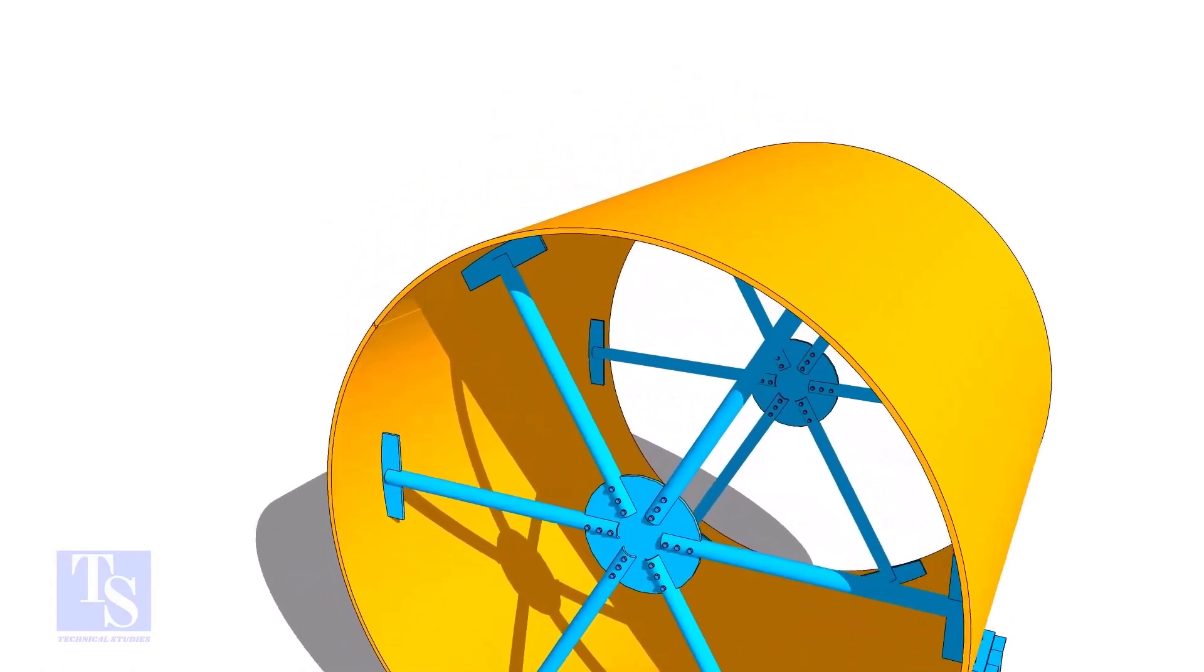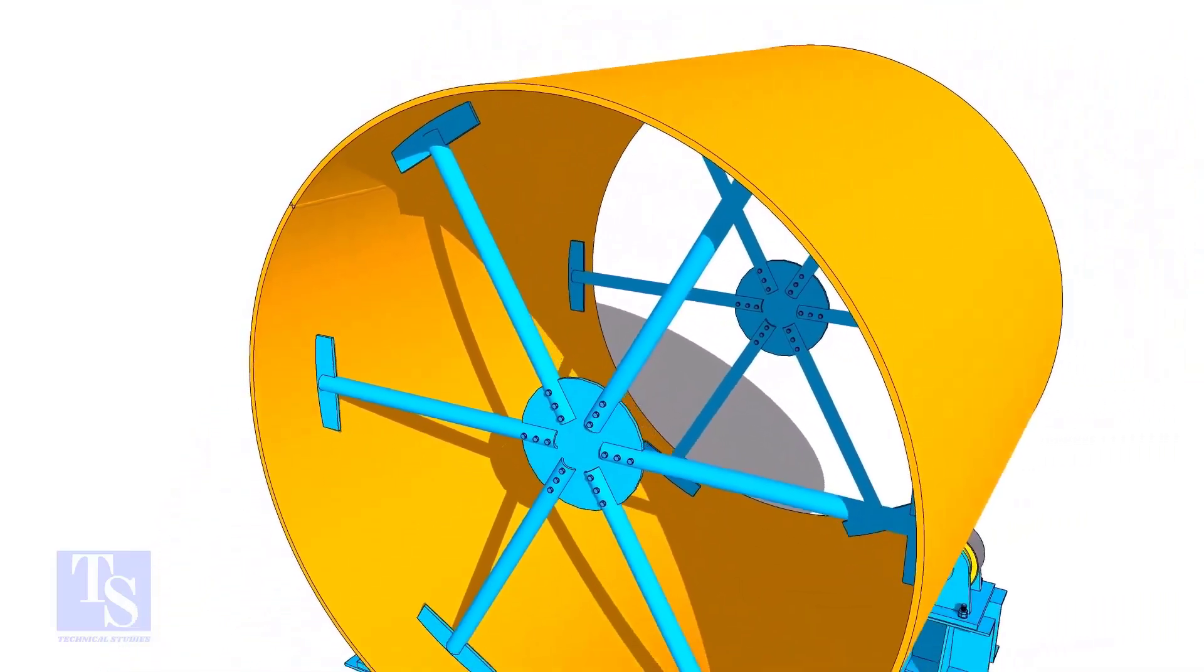After the shell plate rolling, install the spider support and complete the long seam welding. The spider support will help to maintain the circularity of the shell.